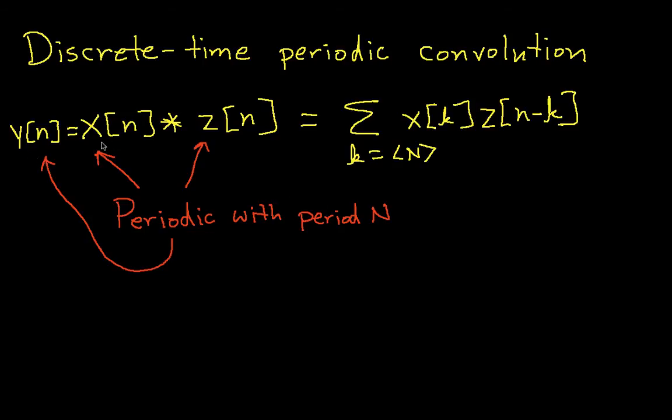So the idea is we have two signals which I've called X and Z. I haven't called the second one H because you typically don't see systems that have periodic impulse responses. They can exist and sometimes you'll see it happen, but typically when you're doing periodic convolution, you're typically dealing with two signals.